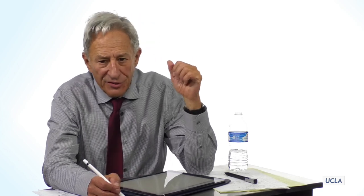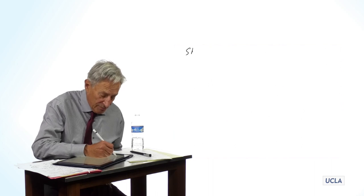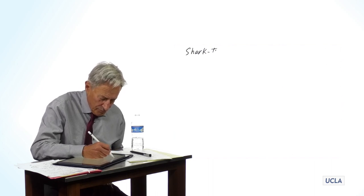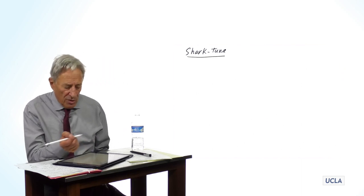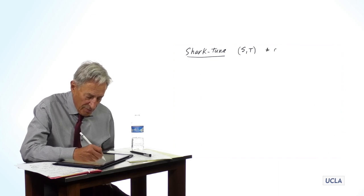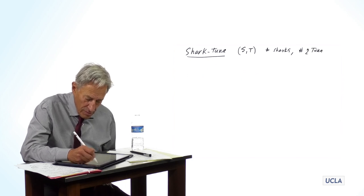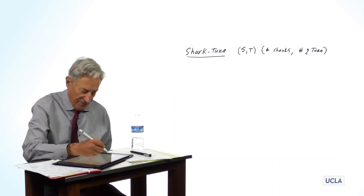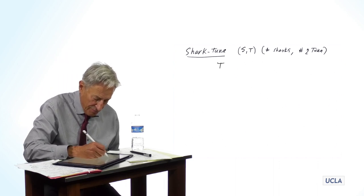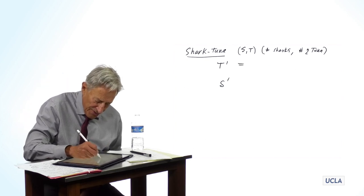So now we're ready to look at a change equation in two variables. And now it gets to be interesting because we are now going to develop our shark tuna model. So we know the state variables. The state variables are S and T, the number of sharks and the number of tuna.